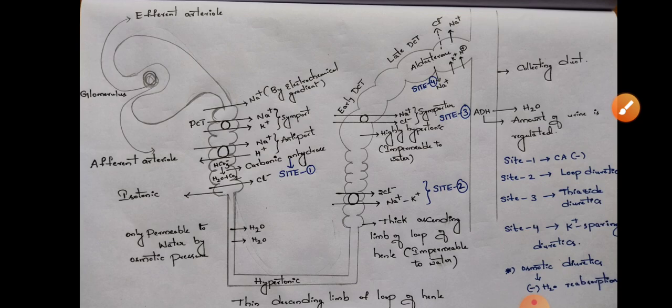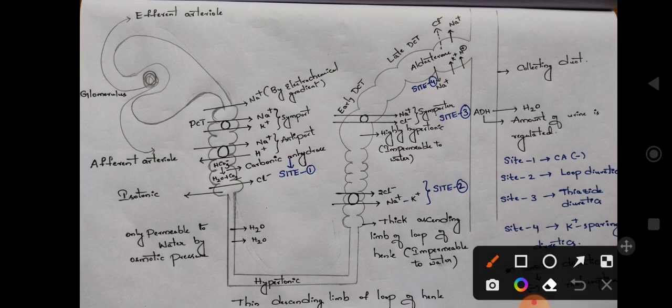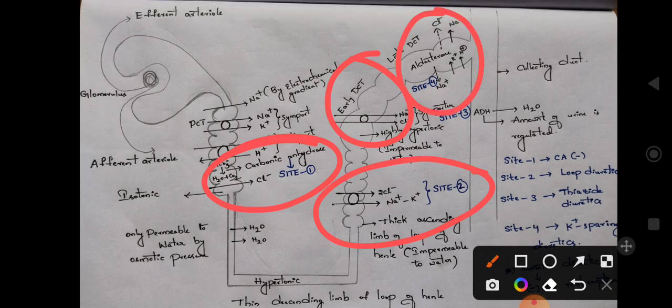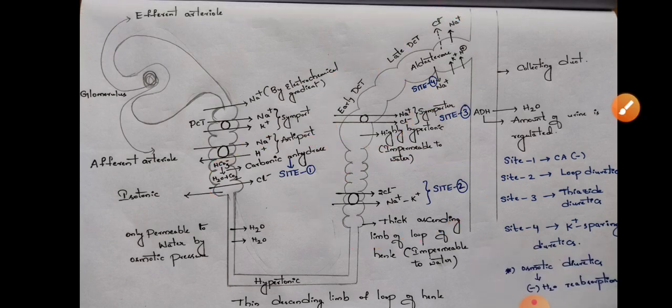The classification of diuretics tells us what are the sites present on the nephron. Site 1 is present on proximal convoluted tubule, site 2 is present on loop of Henle, site 3 is present on early DCT, and site 4 is present on late DCT.